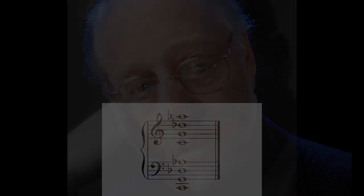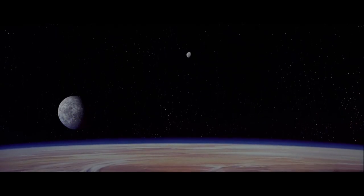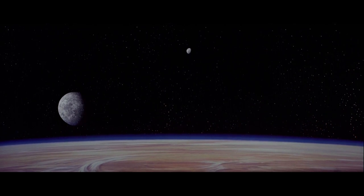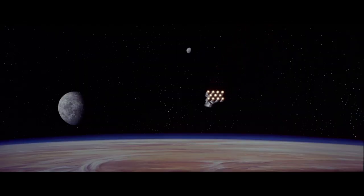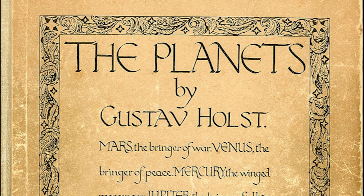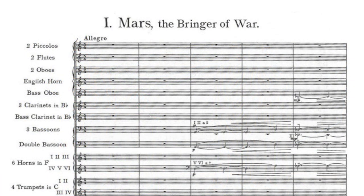Since we can see and hear such a clear connection between these two pieces, it begs the question of why. Why would Williams choose to pay homage so blatantly to this piece specifically? The whole suite that this movement is from is titled The Planets. So from the very beginning, we see a relationship in titles between celestial bodies — planets and stars. But if we look at the title of this specific movement, we see another clear connection: Mars, the bringer of war.